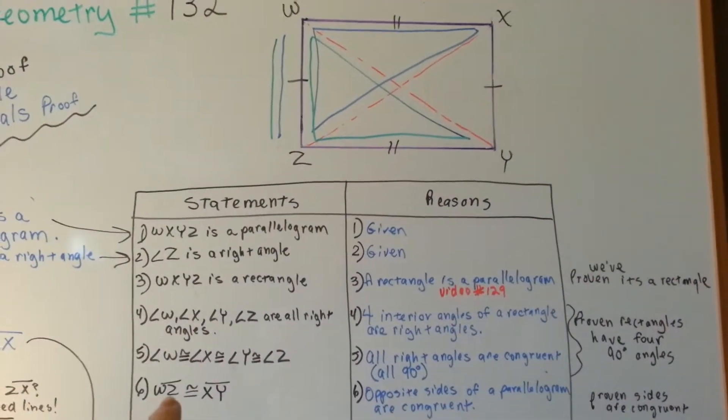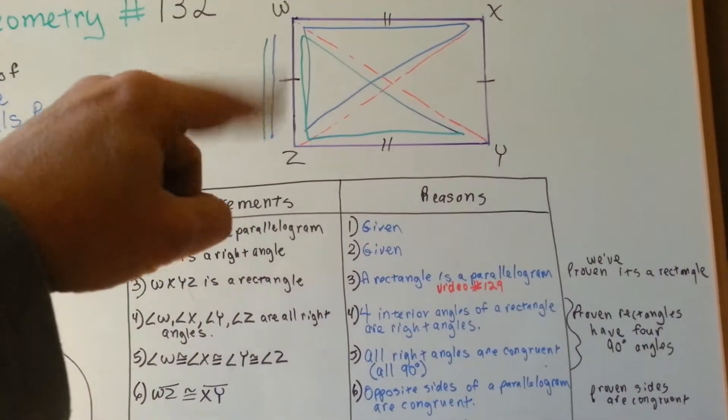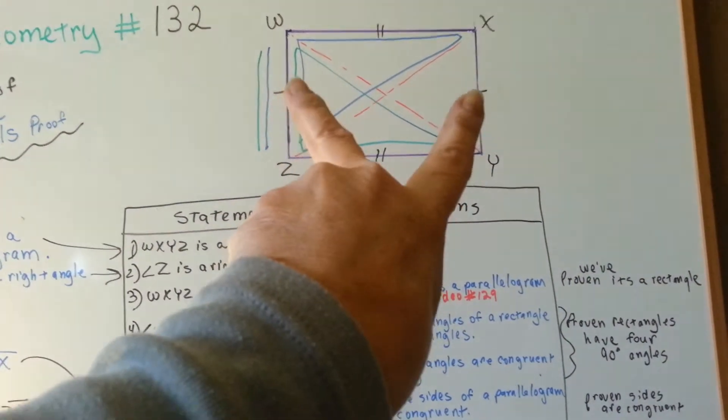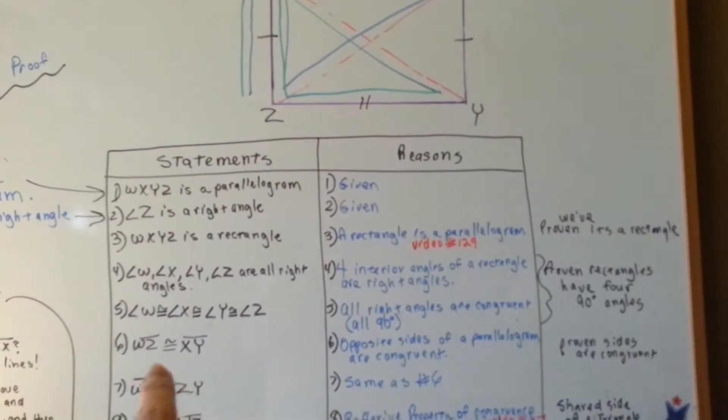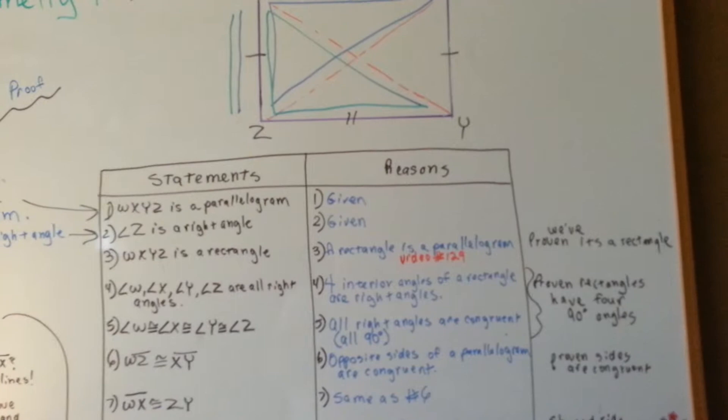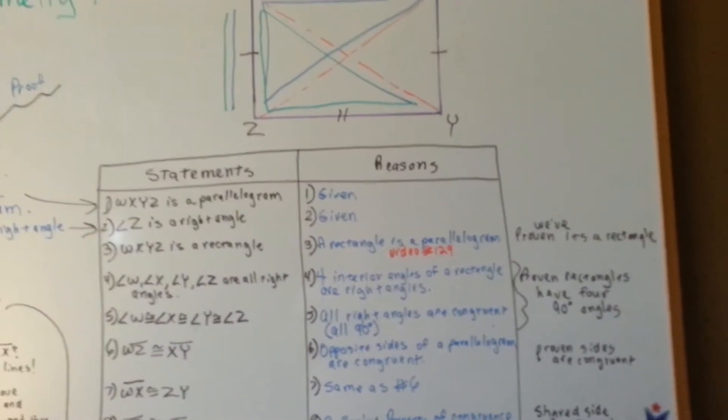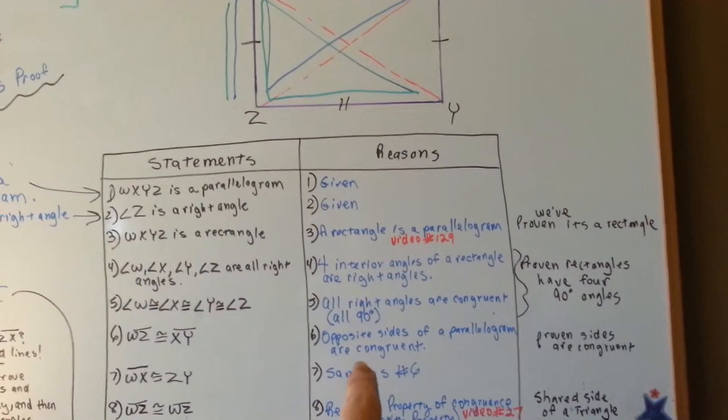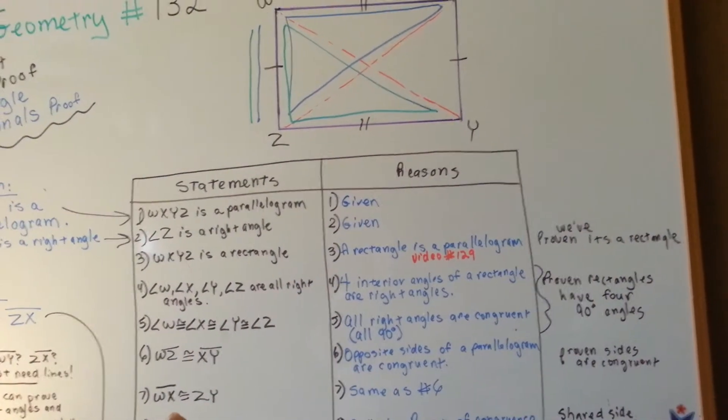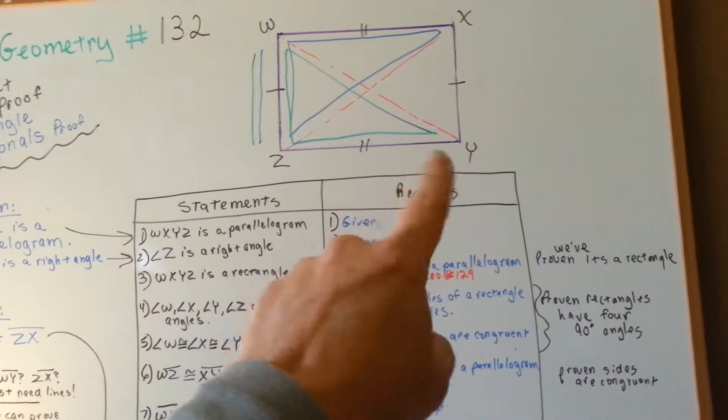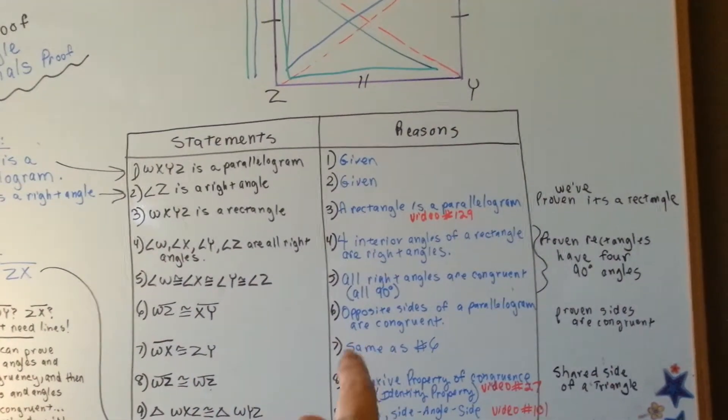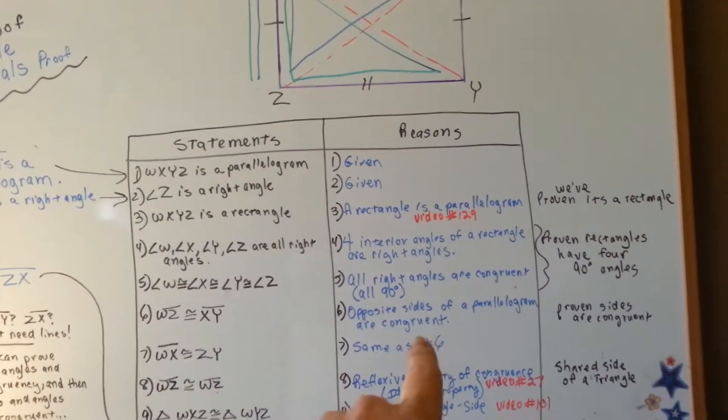So, now we're going to say that WZ, this line, is congruent to XY. See, these two are congruent, see the slash marks? Our reasoning is opposite sides of a parallelogram are congruent. Then we say that WX, this line, is congruent to this line, see the two hash marks? Same reason, opposite sides of a parallelogram are congruent.